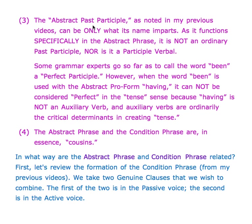Point three: the abstract past participle, as it functions specifically in the abstract phrase, is not an ordinary past participle nor a participle verbal. Some grammar experts call the word been a perfect participle; however, when been is used with the abstract pro form having, it cannot be considered perfect in the tense sense, because having is not an auxiliary verb — and auxiliary verbs are ordinarily the critical determinants in creating tense.